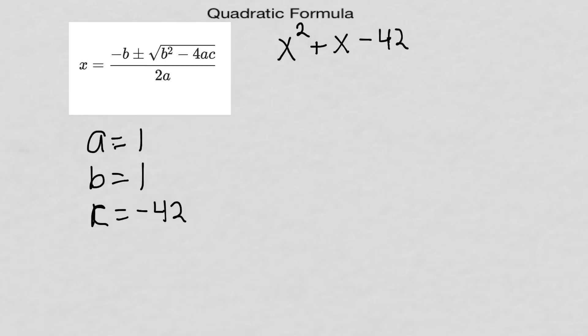Now I'm gonna set up my problem, set up my shell. I always do this - it keeps me from making mistakes. Everywhere there's a variable I put parentheses. There's my b squared minus 4, there's an a, there's a c.